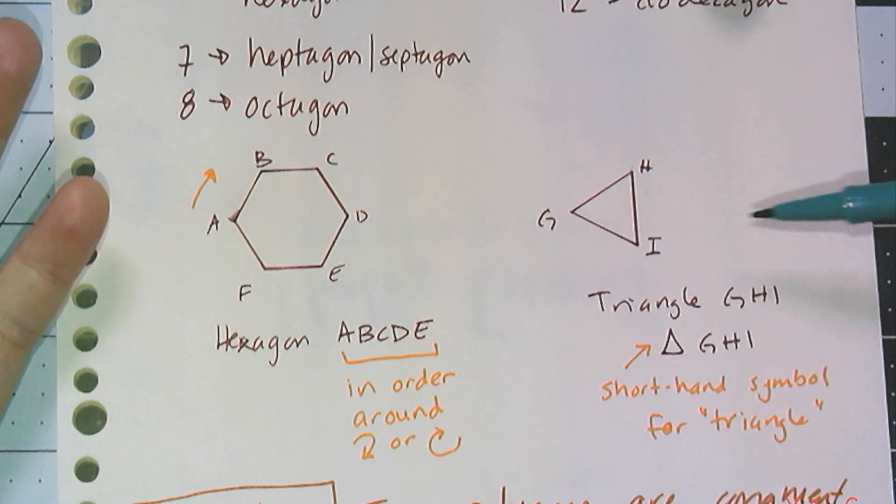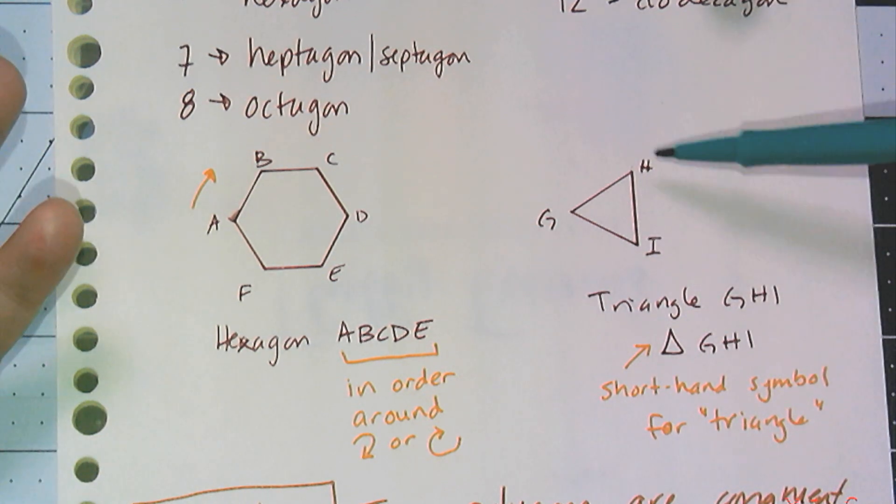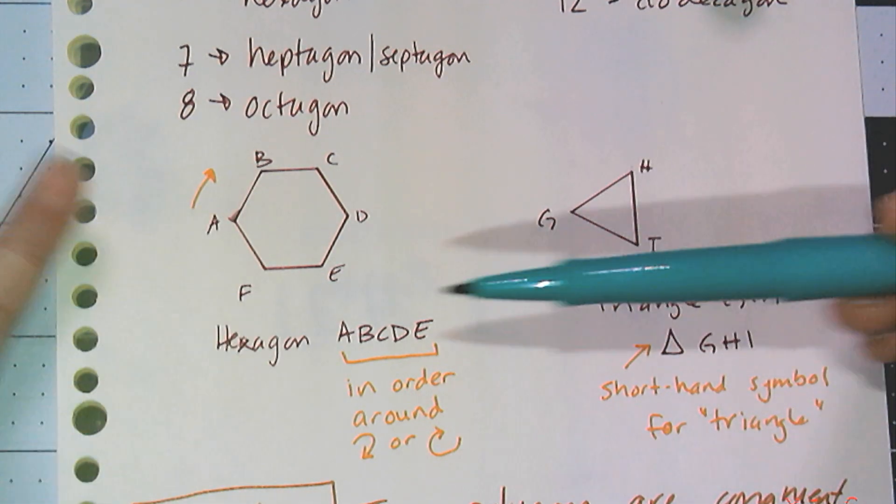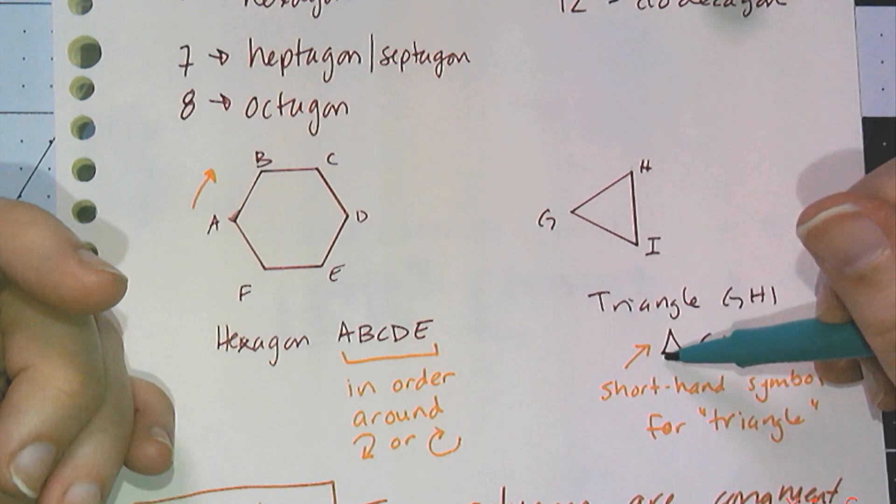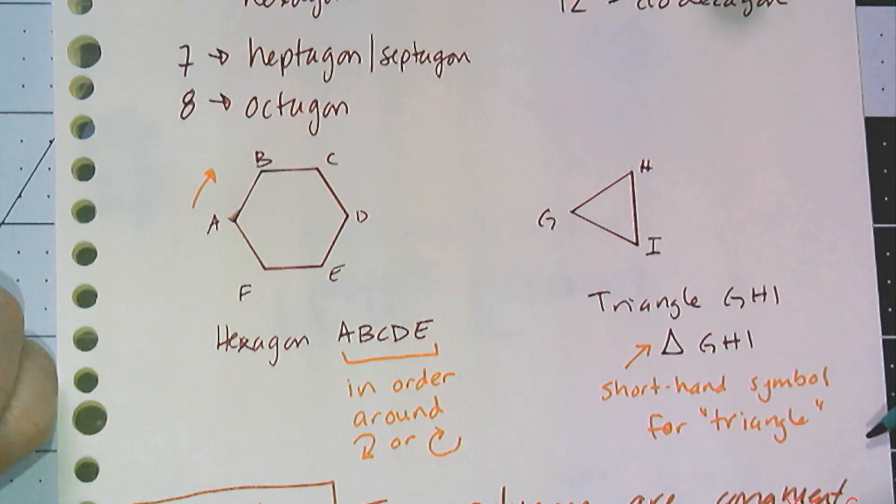Now of course triangles, easy, GHI. It doesn't matter which direction you go. But luckily for us, triangles have a shorthand. I can just draw this little triangle symbol and then give the three letters of the vertices to represent triangle, in this case triangle GHI.